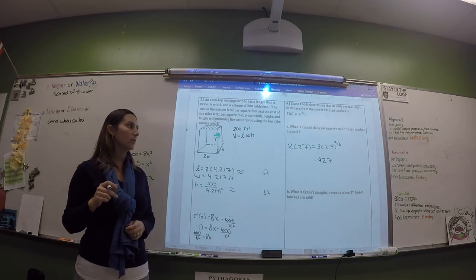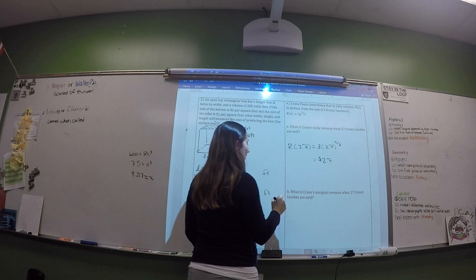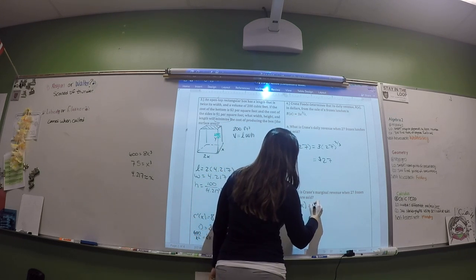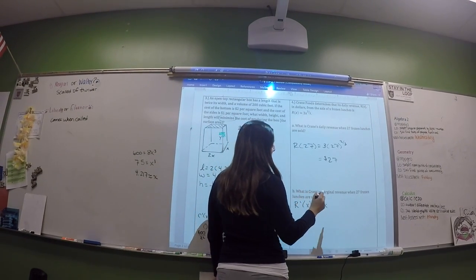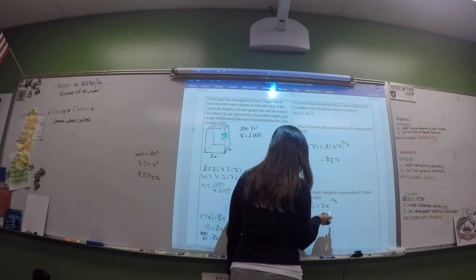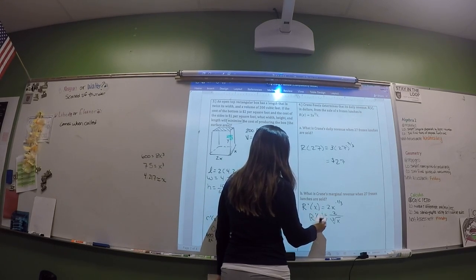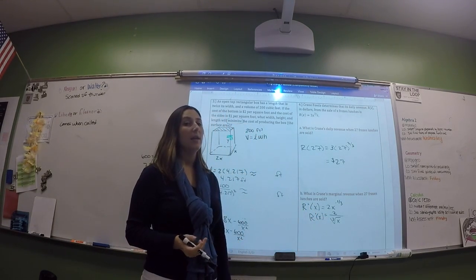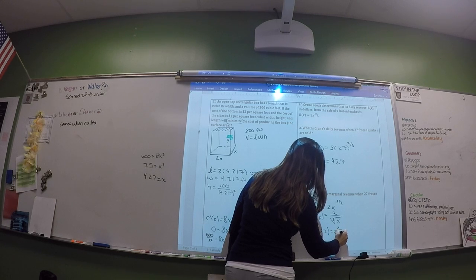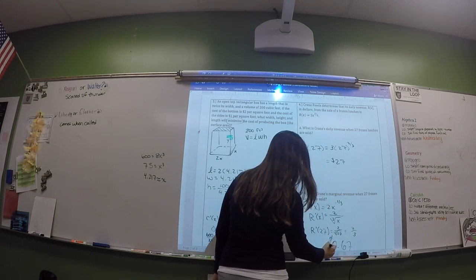The cube root of 27 is 3, and 3 squared is 9, and 9 times 3 is 27, so the revenue is $27. Then it wants the marginal revenue — just find the derivative. Take the two-thirds, multiply by 3, you get 2; subtract 1 from the exponent to get the negative one-third power. Rewrite as 2 over the cube root of X. Plug in 27: that's 2 over 3, which is about 67 cents.